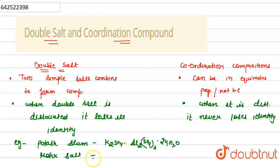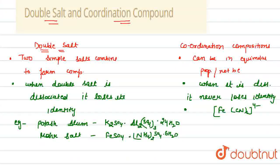And for moher salt, the formula of the moher salt is FESO4 dot NH4 twice SO4 and 6 water. So, this is the example of the double salt and example of coordination compound is like FECN6 four negative.